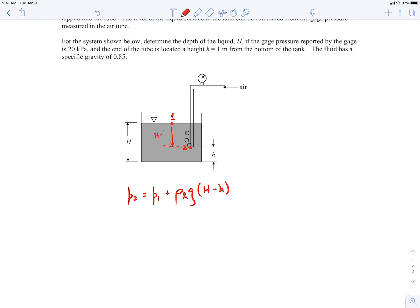So it's this distance, capital H minus little h here. Okay, so that's the pressure at two. Of course, the pressure at one is just going to be atmospheric pressure, so it'll be equal to zero gauge pressure.